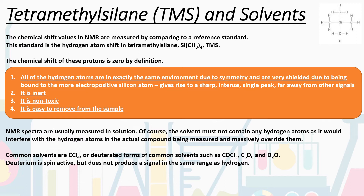The most common solvents now are deuterated forms of common solvents. The most common is CDCl₃, deuterated chloroform. Others include deuterated benzene, C₆D₆, or deuterated water, D₂O — it depends on what your sample is actually soluble in. Deuterium is spin active, and in carbon-13 NMR we typically see a triplet of three equal-intensity lines at 77 ppm when using CDCl₃. However, deuterium doesn't produce a signal in the same range as hydrogen, so we typically don't see deuterium signals in the proton NMR spectrum.